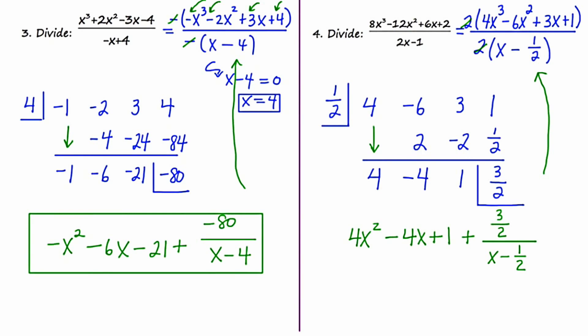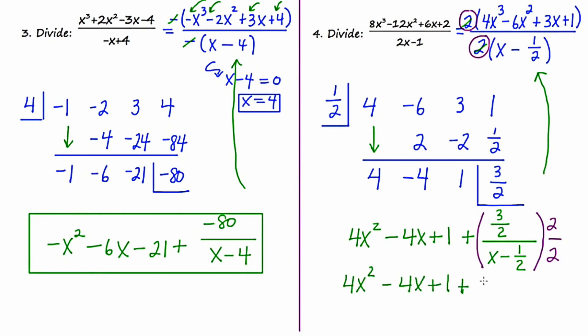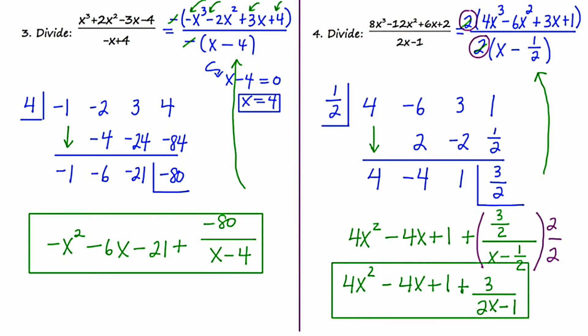We don't want to leave a remainder that looks complex, so I'll show you a quick way to fix that. I'm going to partition this with grouping symbols and multiply the top and the bottom by 2 — essentially putting back the 2 I factored out earlier. So I end up with 4x squared minus 4x plus 1, and the top becomes 3 halves times 2, which is 3, and the bottom becomes 2x minus 1. There you have it — four examples of synthetic division, a division shortcut used when dividing by a linear binomial.